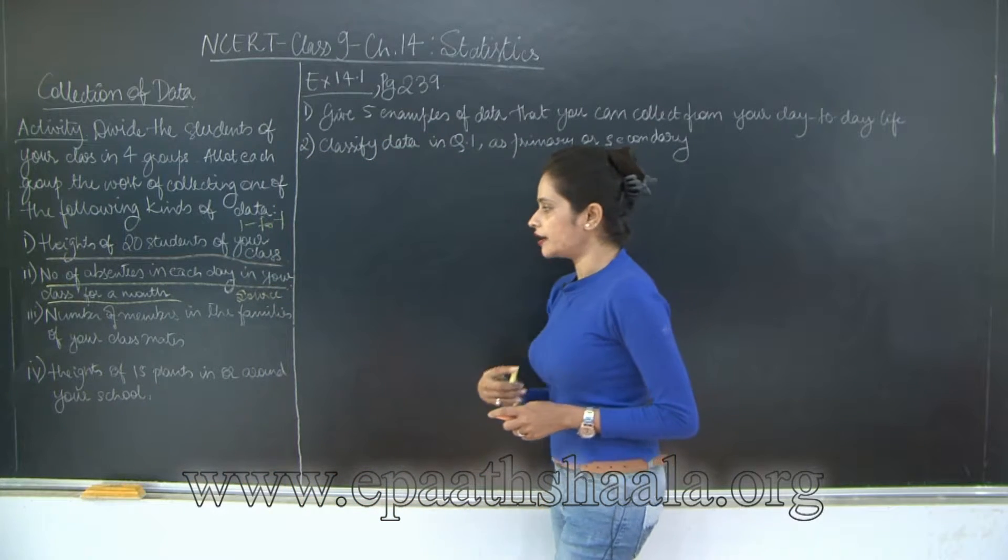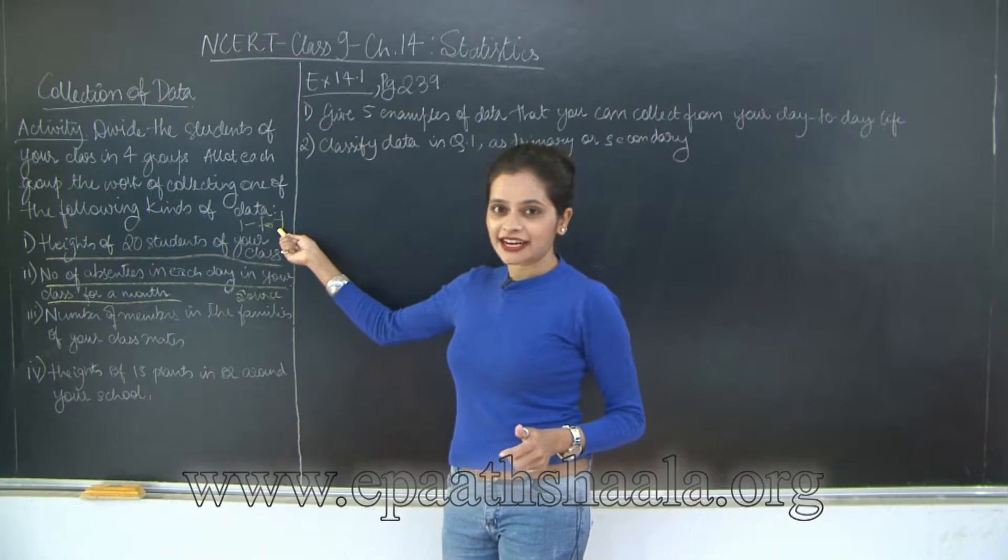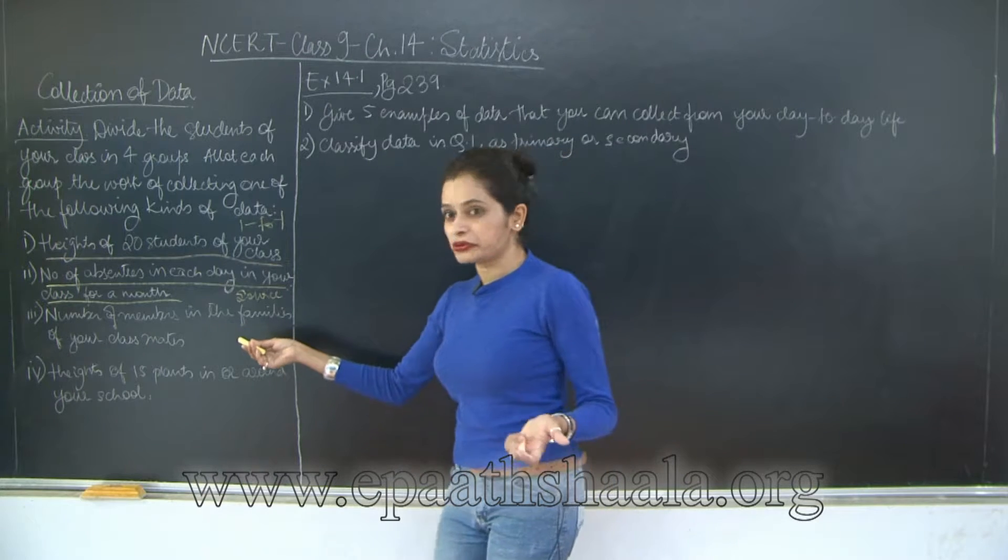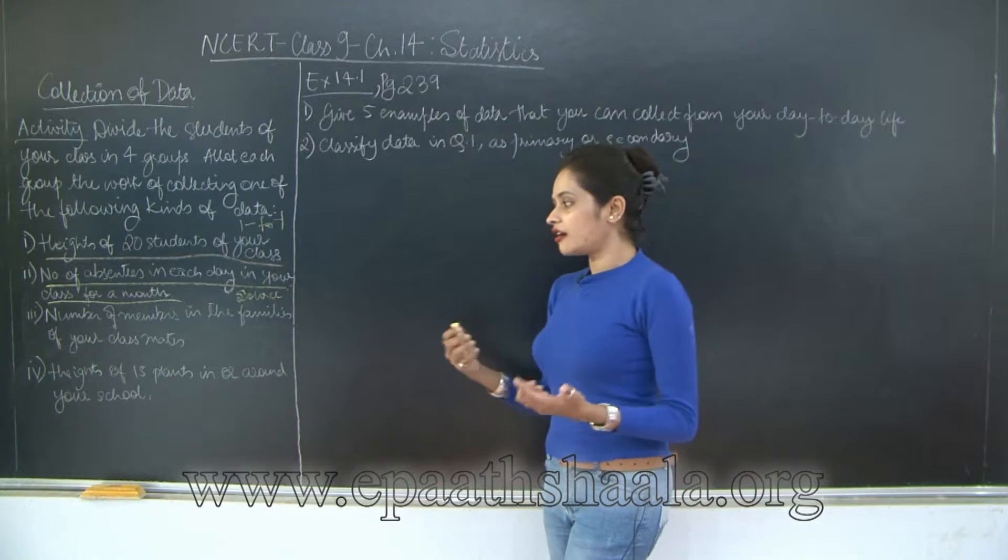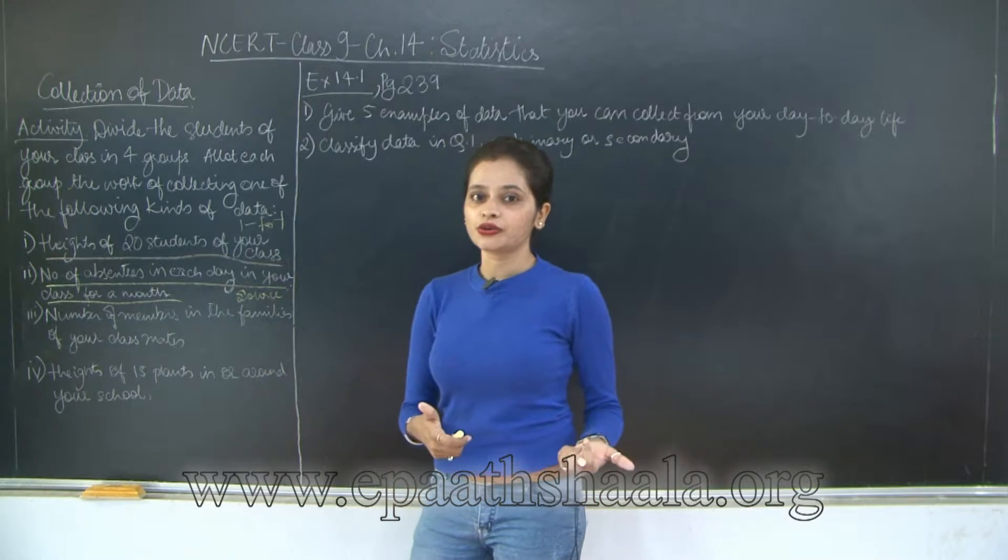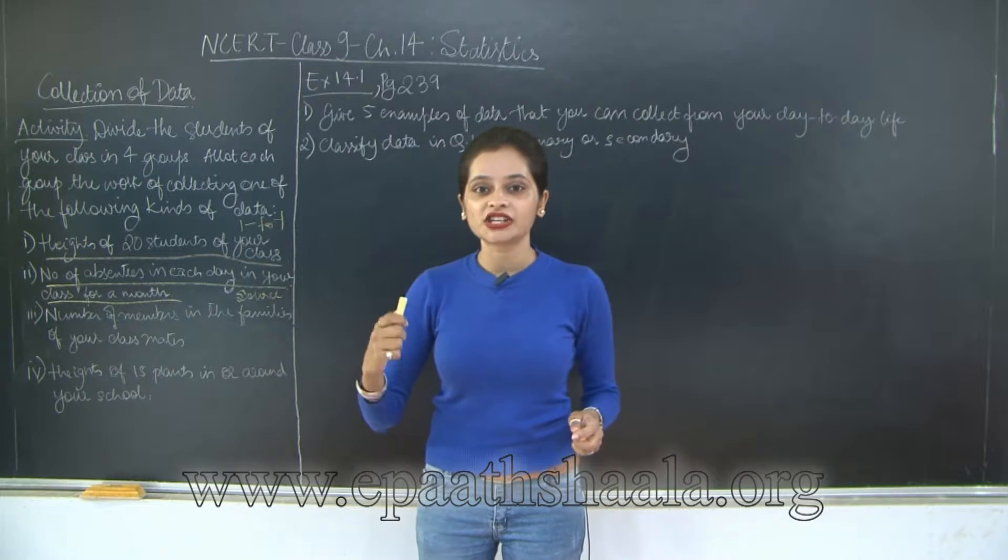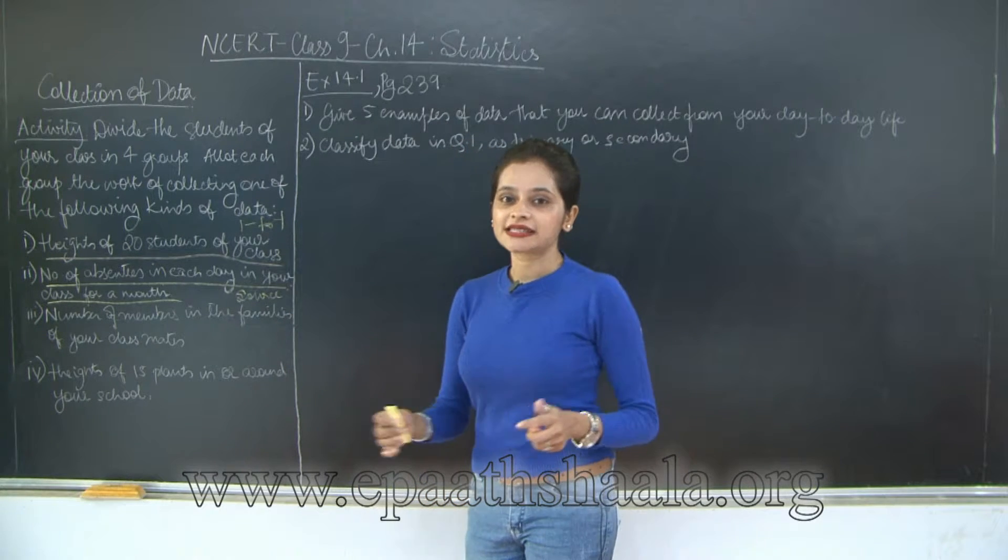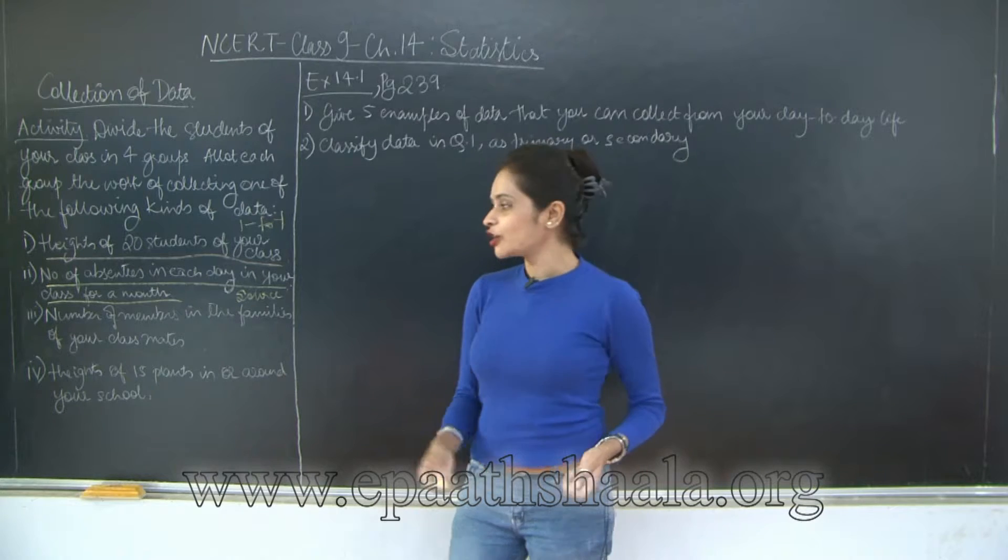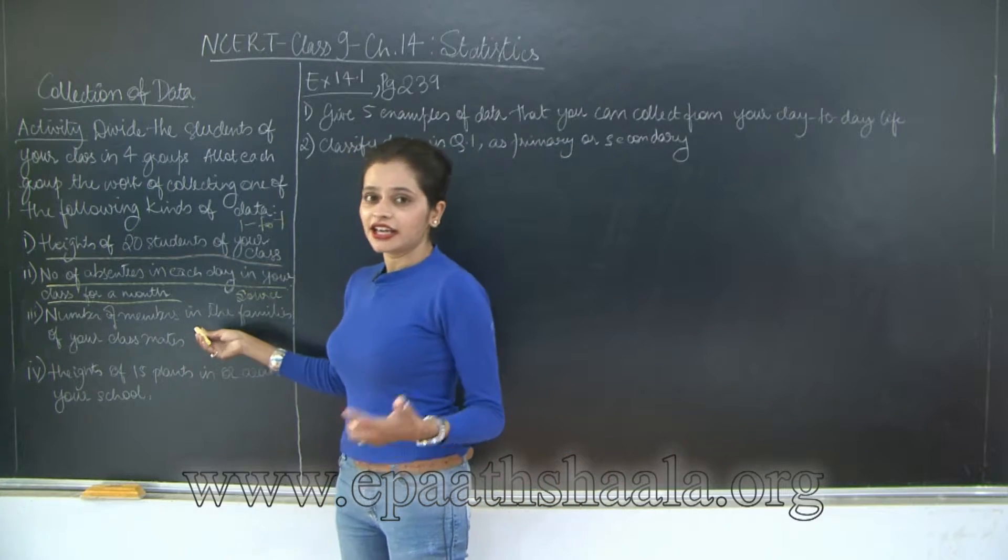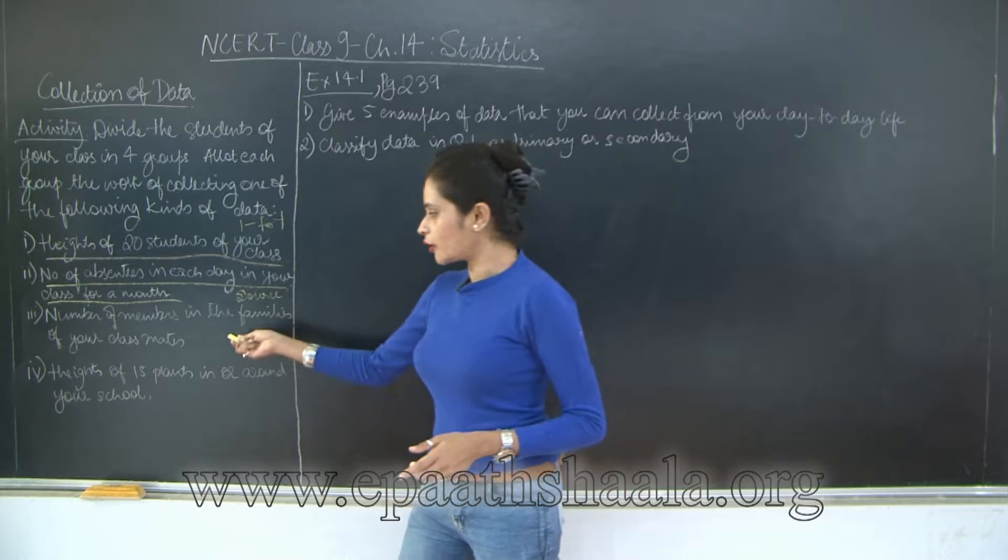Now let's take a look at the third one: number of members in the families of your classmates. This situation is a little tricky. It could either be through one-to-one interaction - if you have a very enthusiastic team, Group 3 is subdividing and approaching each student and finding the number of family members - or they could be a smart group. They could invest their enthusiasm in thinking how the data can be extracted very easily. They will approach the office premises and ask for the records that are filled at the start of the year in forms where the number of family members is written. So here it could either be through one-to-one interaction or through source, depending upon the enthusiasm and smartness of your team. So I'm not underlining this as of now.